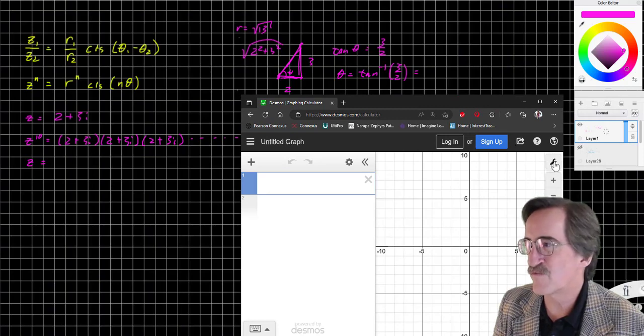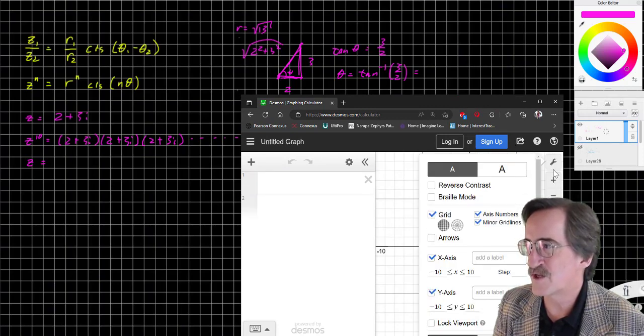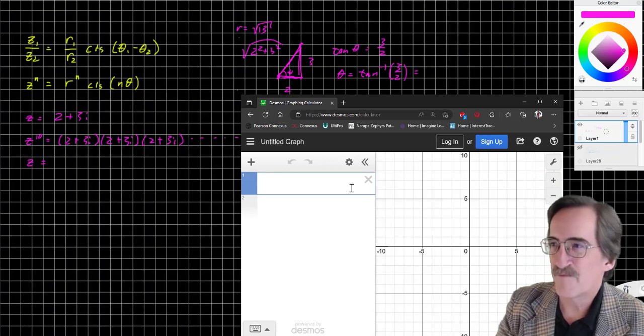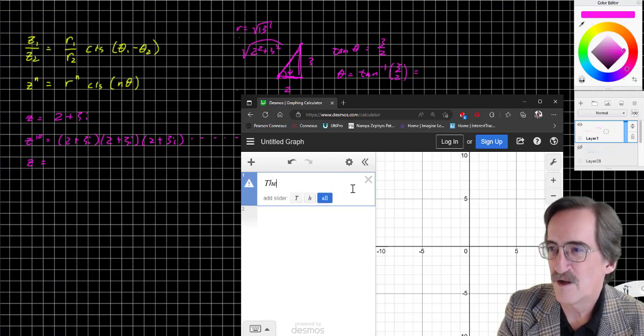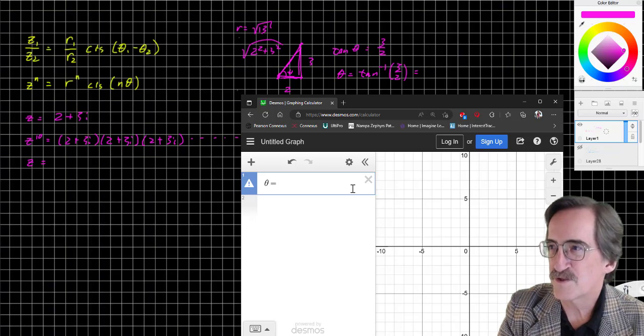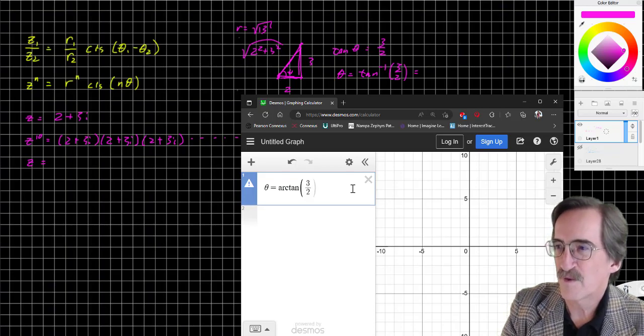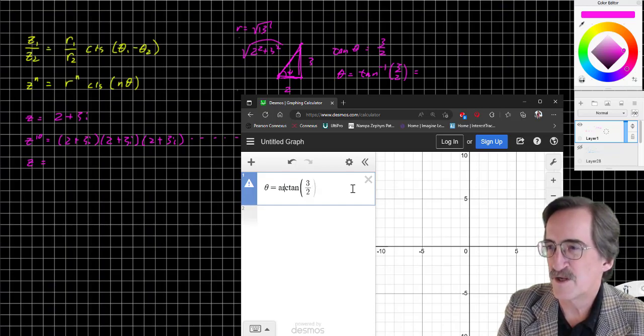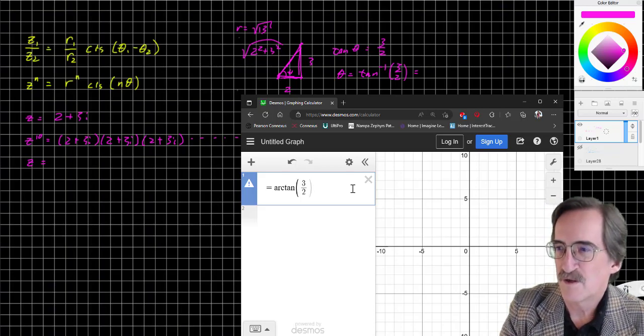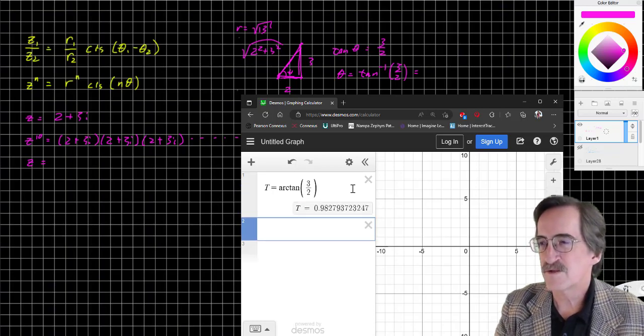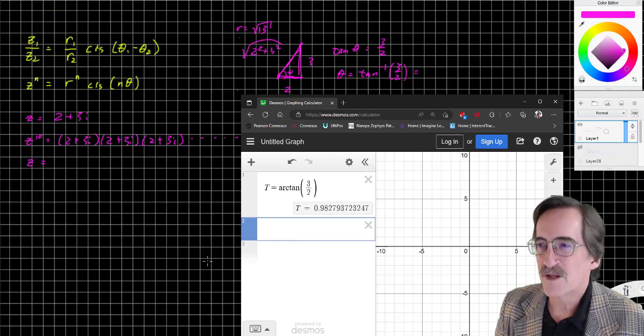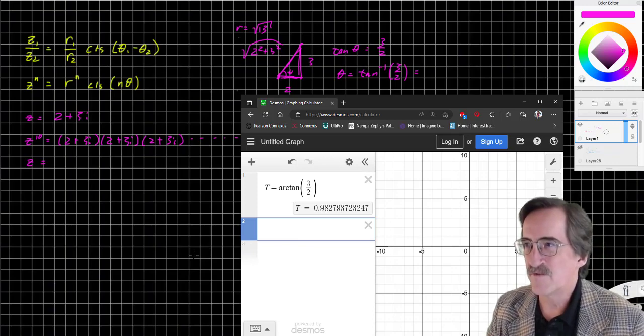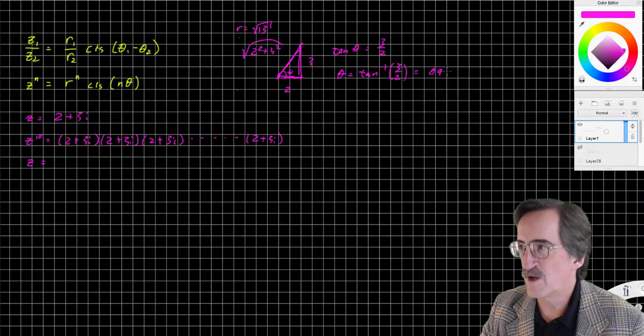So theta is arctangent 3 halves. We're going to default to radians here. So I'm going to say theta equals arctangent 3 halves. It's not going to like that because theta is reserved, so I'm going to say t. So there's my angle in radians. Not quite one radian, but pretty close. I'll say 0.98 for the sake of simplicity.